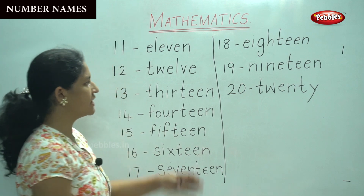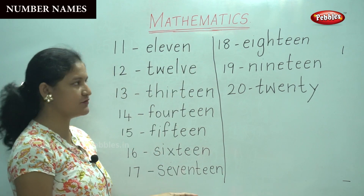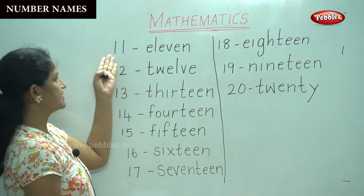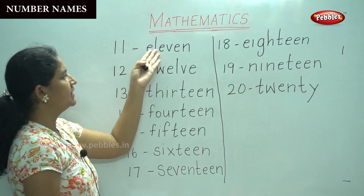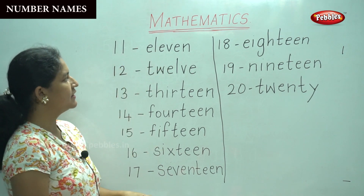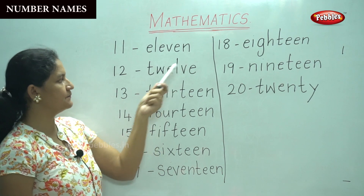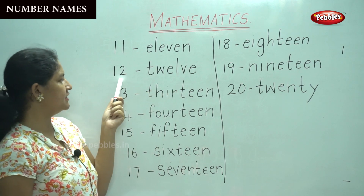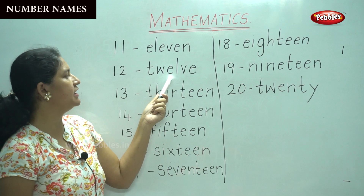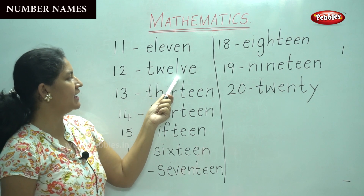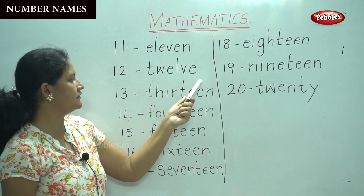So shall we say the number names together, children? Yes. For 11: E, L, E, V, E, N. 11. 12: T, W, E, L, V, E. 12.